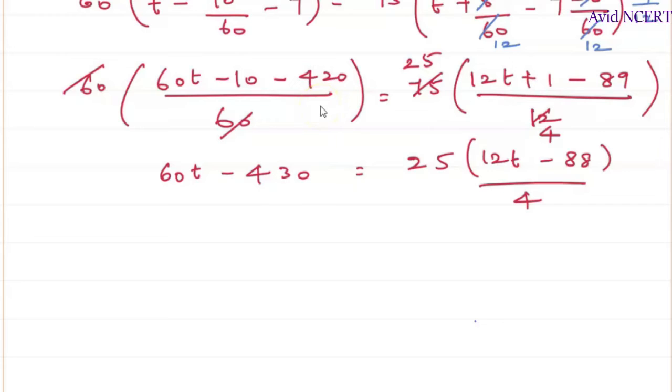This 4 can be multiplied to the left-hand side. Or here we can try to simplify it, which is 60t minus 430 equals 25. And 4 is common in these two terms, so we are taking out 4 times 3t. Since we are taking 4 out, it is 3t minus 4.